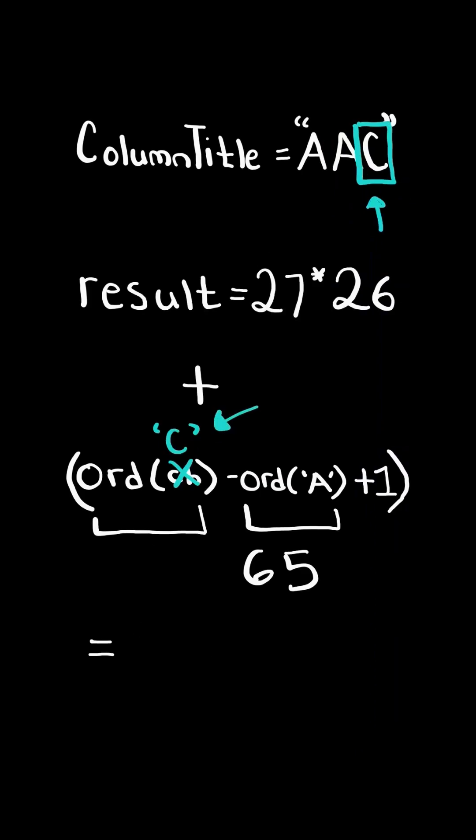Now the character is C, and C has an ASCII value of 67, and so adding both these expressions together gives us a value of 705, and so we update result with the new value.